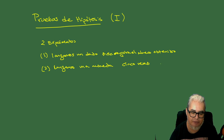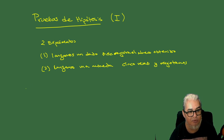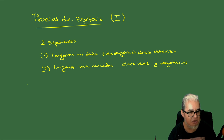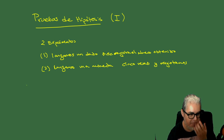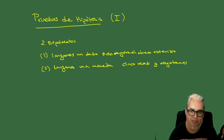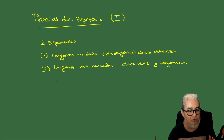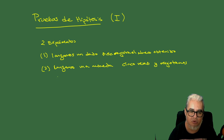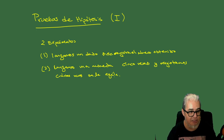Vamos a lanzarla cinco veces y vamos a registrar cuando salga una de las dos caras. En México, las monedas tienen de un lado un águila, que es el escudo nacional, y del otro lado tienen algunas un número, otras una cara. Tradicionalmente le llamamos águila y sol. Entonces vamos a registrar cuántas veces sale el águila, que es uno de los lados de las monedas aquí en México.